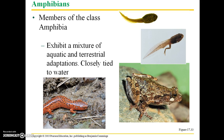Class Amphibia exhibits a mixture of aquatic and terrestrial adaptations, and most species are very closely tied to water. Here we have pictures of tadpoles, which are the immature form of both frogs and salamanders, and then an adult frog as well as an adult salamander.